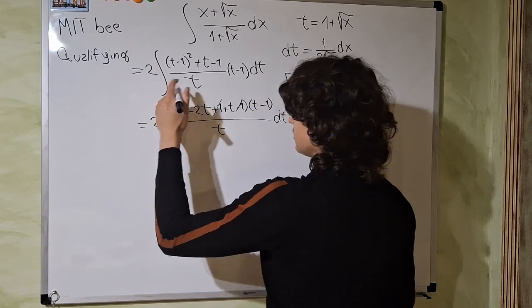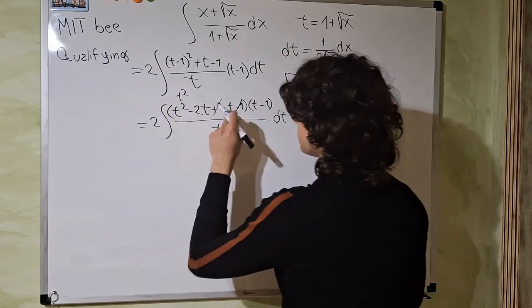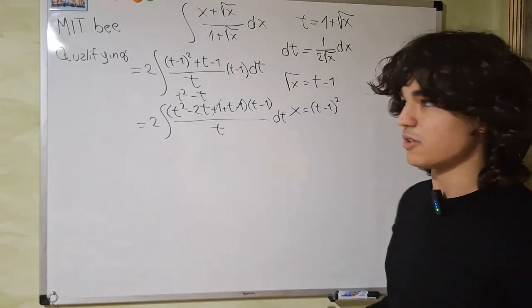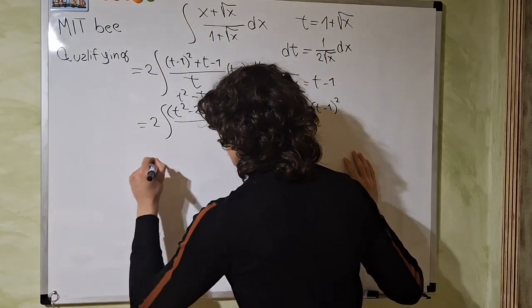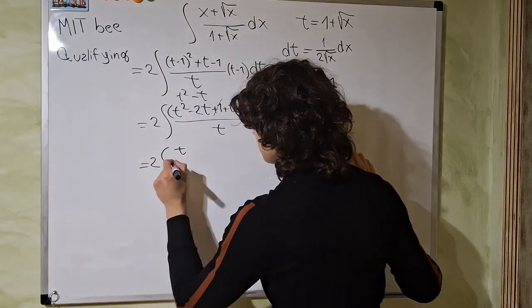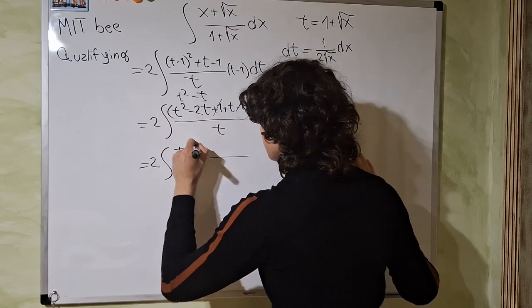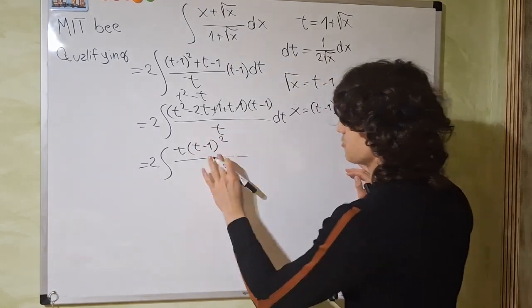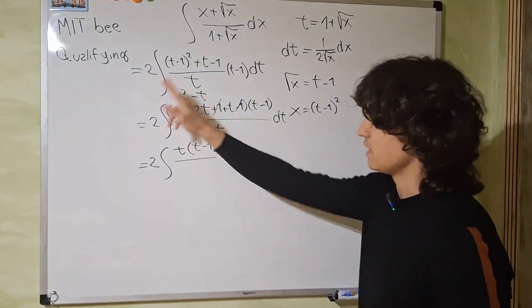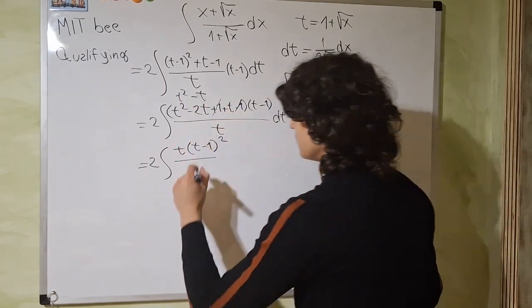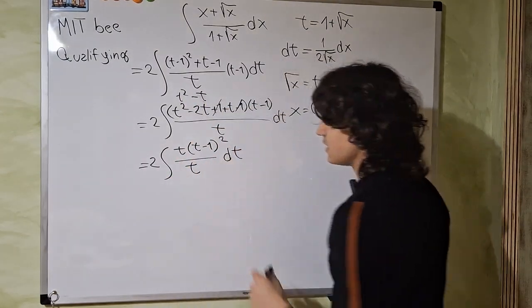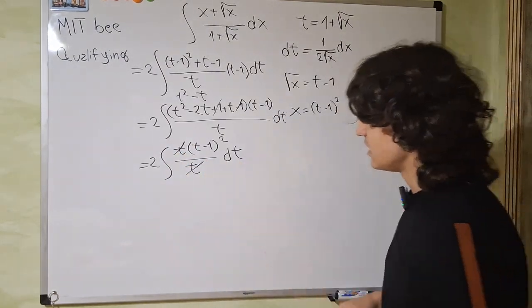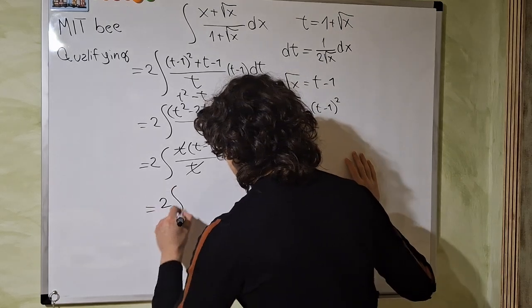And we basically get here, I'm going to write it above the integral, t squared minus 2t plus t is minus t. Can we multiply now? No, because we can do another thing. Look at this. We can factor out a t in the numerator. Then we have t minus 1 times t minus 1. But this is nothing but t minus 1 squared. Because we took a t outside the t squared minus t, all divided by t dt. And this simplifies the integral a lot. Because we can get rid of these two t's.